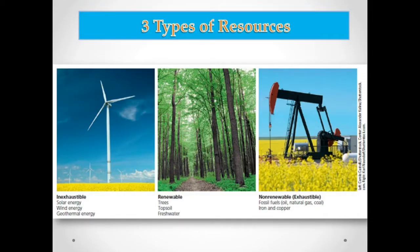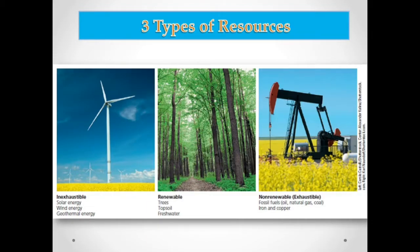The last topic for this week's lesson is the three types of resources. Number one is inexhaustible resources — these are resources that can supply us for a very long period of time because they cannot be depleted. They can supply us for almost six billion years. Examples include solar energy, wind energy, and geothermal energy.